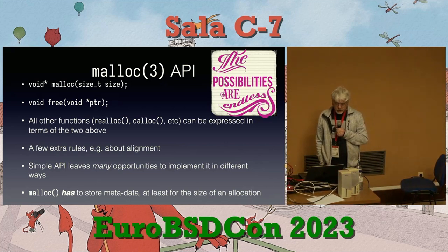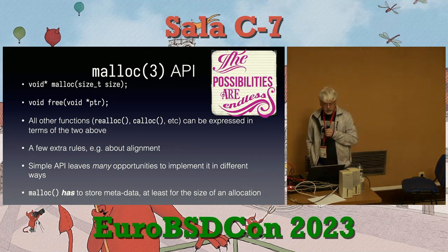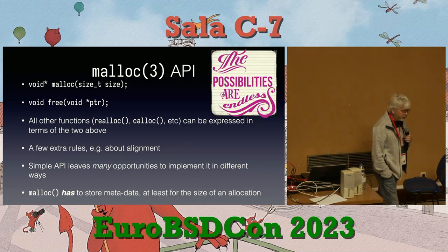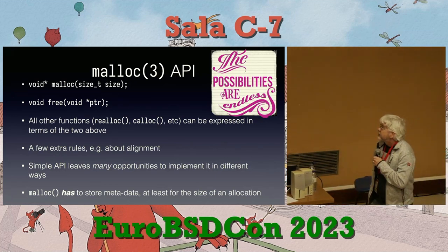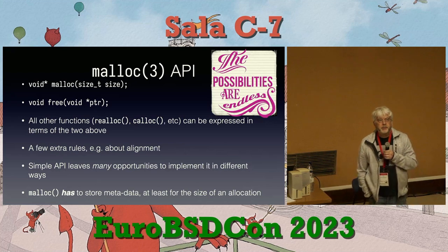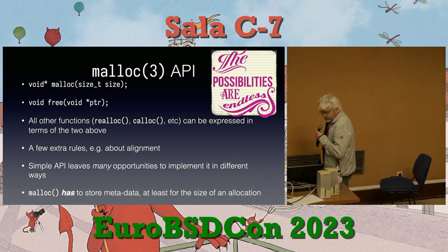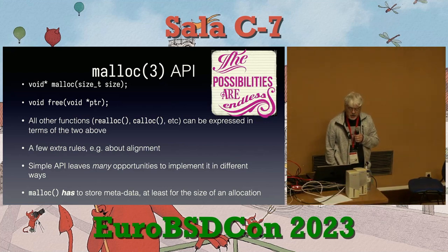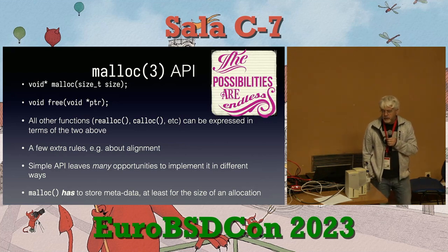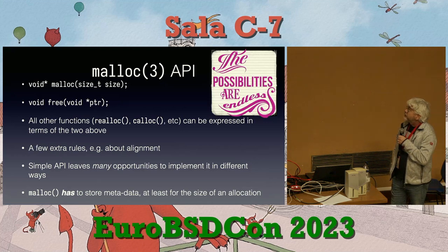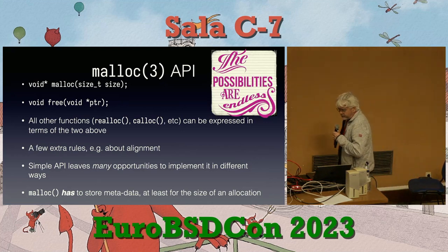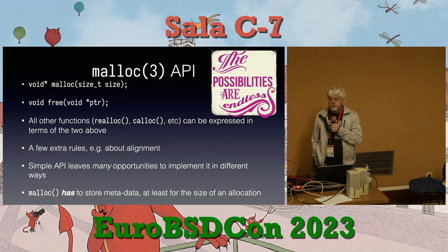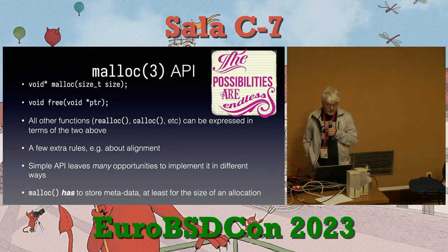Two calls: malloc and free — basically saying I want a piece of memory, and I do not longer need it anymore. There are a few related functions in the API. They can be expressed in terms of malloc and free themselves. Of course, any serious implementation will have specialized implementations for the other API calls like realloc and calloc, because when you know a bit about the actual implementation, you can make much faster versions of them.